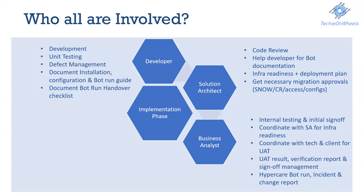The business analyst also coordinates with the solution architect for infra readiness, and coordinates with the technical team and the client for UAT, helping maintain the UAT result verification report and managing UAT sign-off collaboration. Once the UAT is approved and the bot is moved to hypercare, the BA monitors the bot performance and handles any incidents or changes reported during hypercare, with the technical team on standby for any bugs or incidents.